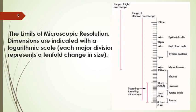The range of the light microscope starts from about 100 nanometers to more than 100 micrometers. But the range of the electron microscope is marvelous — it starts from about 10 angstroms up to near about 100 micrometers. In this range, a number of entities are present, including atoms, amino acids, proteins, viruses, mycoplasma, typical bacteria, red blood cells, and epithelial cells.